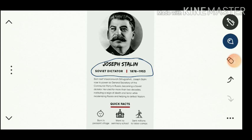Born as Ioseb Jughashvili, he is simply called Joseph Stalin. He rose to power as General Secretary of the Communist Party in Russia and later became Soviet dictator from 1924 to 1944, ruling for more than two decades and instituting a reign of death and terror.